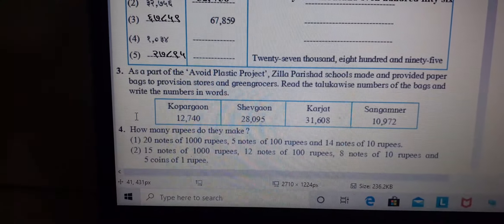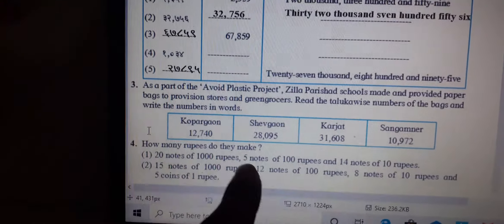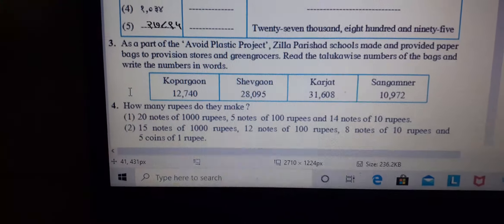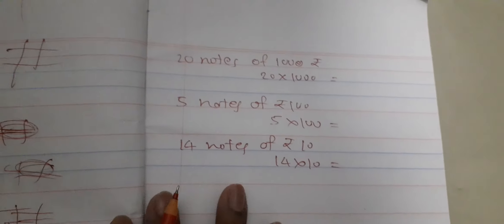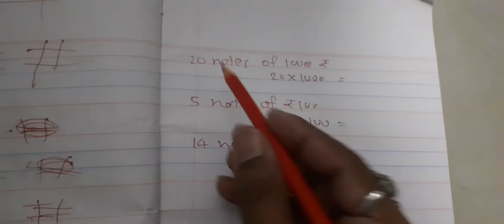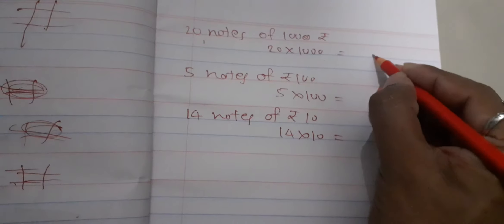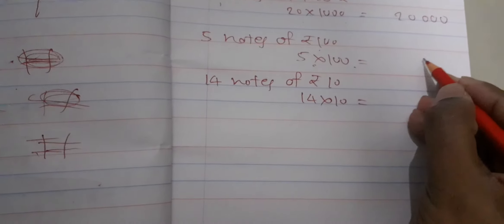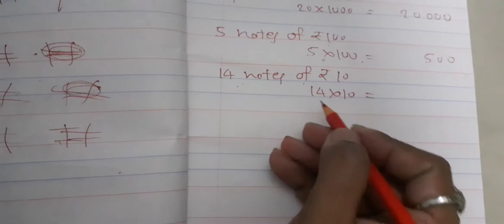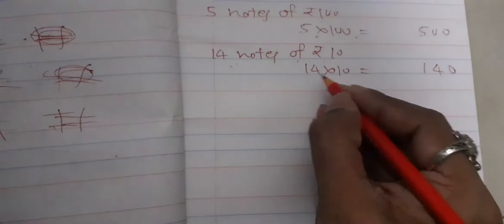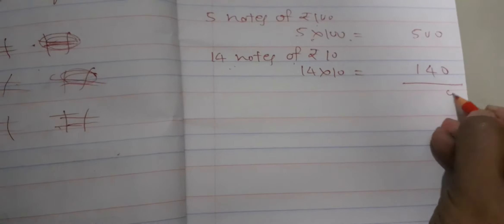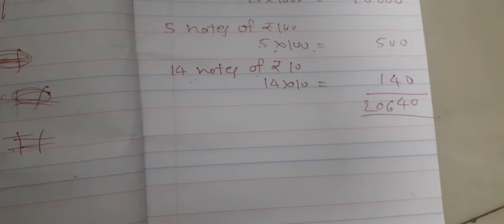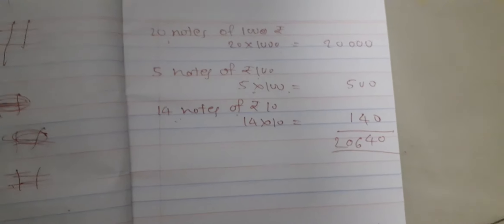Next is four question. How many rupees do they make: 20 notes of 1000, 5 notes of 100 and 14 notes of 10 rupees? How much will it come to you? First see the solution - 20 notes of 1000, 20 into 1000 is how much will it come to you, 20,000. 5 notes of 100 means 500 and 14 notes of 10 rupees will it come to you, 140. 14 into 10 will it come to you, 140. Add 0 is how much will it come to you, 20,640.